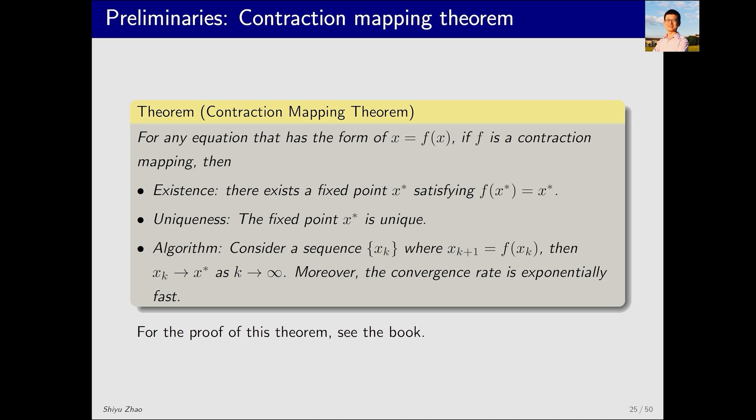With these concepts, we can introduce the contraction mapping theorem, a powerful theorem that is useful not only in this course but also in many other fields. If f is a contraction mapping, then for the equation x equals f(x), the contraction mapping theorem suggests three important results. First, existence. Regardless of the specific expression of f, if it is a contraction mapping, there exists a fixed point, x star satisfying f(x*) equals x*.